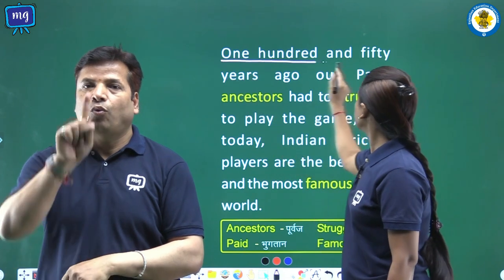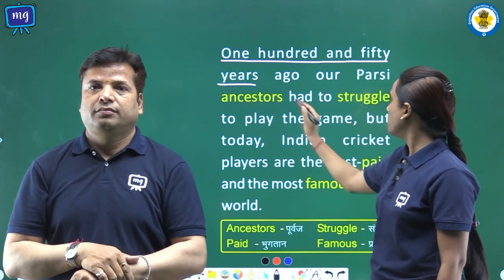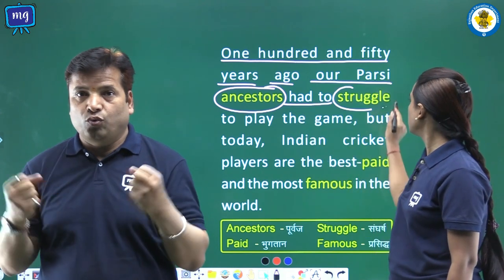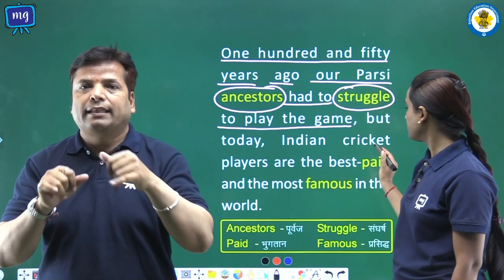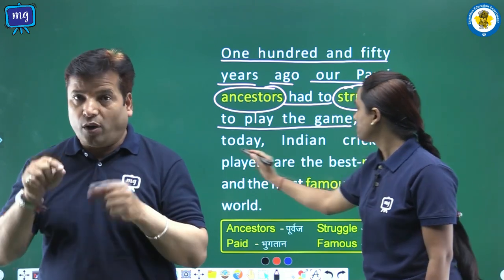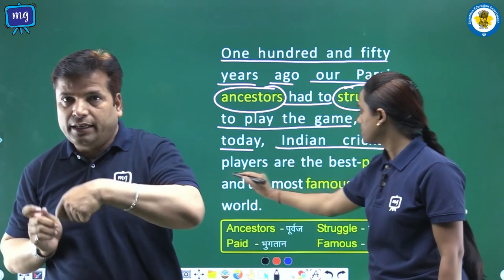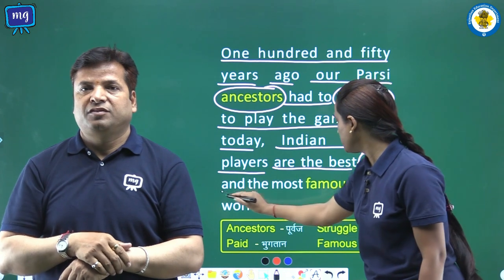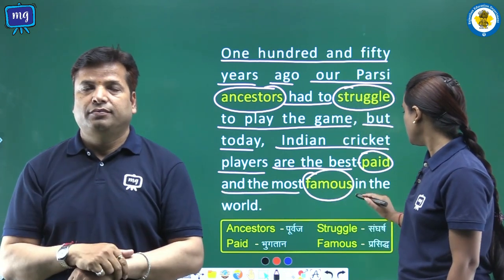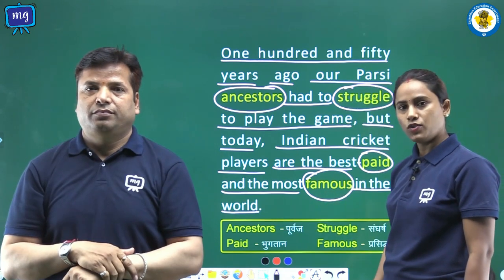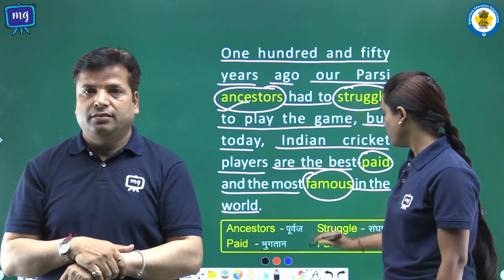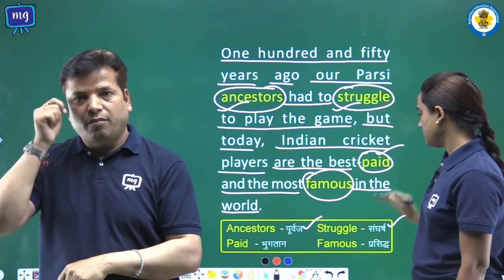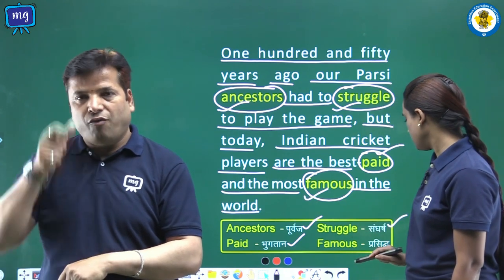One hundred and fifty years ago, our Parsi ancestors had to struggle to play the game. But today, Indian cricket players are the best paid and the most famous in the world. Word meanings: ancestors — purvaj; struggle — sangharsh; paid — bhugtan; famous — prasiddh.